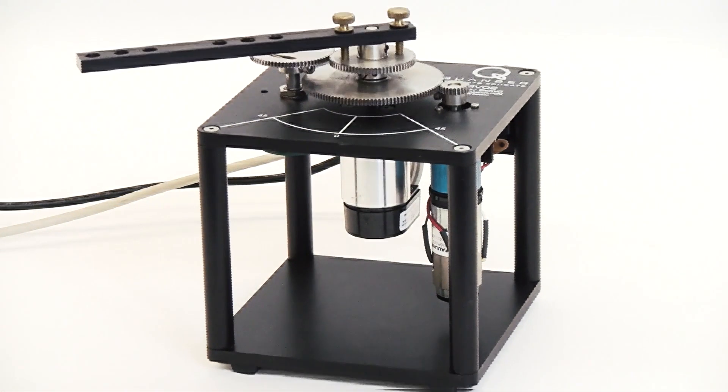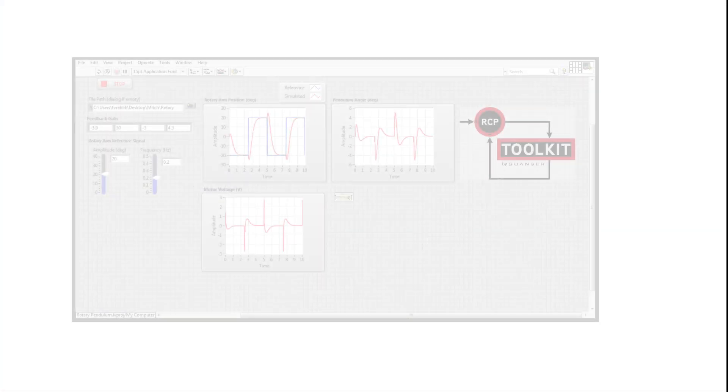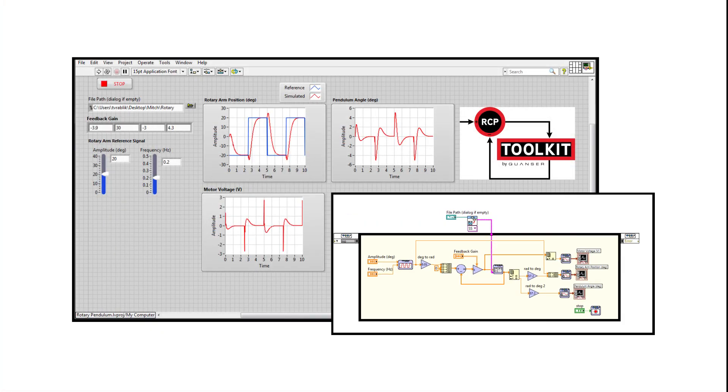Use of high-quality motors and high-resolution encoders ensures inherent precision, resulting in accurate and repeatable results. That makes the Rotary Control Experiments ideal for validation of various research concepts and algorithm frameworks.